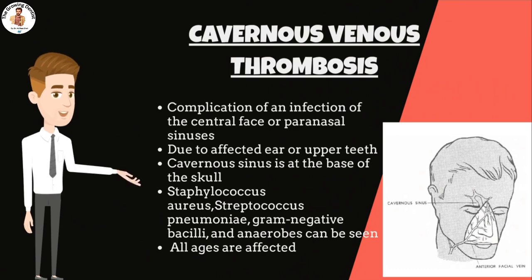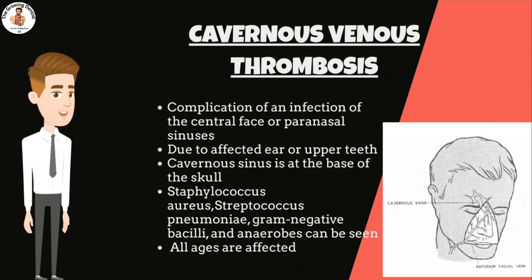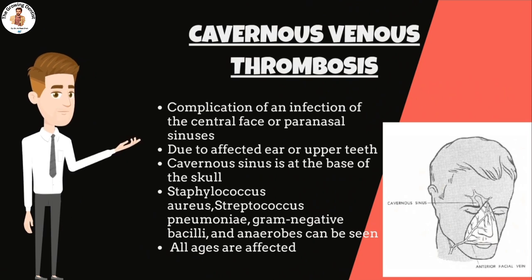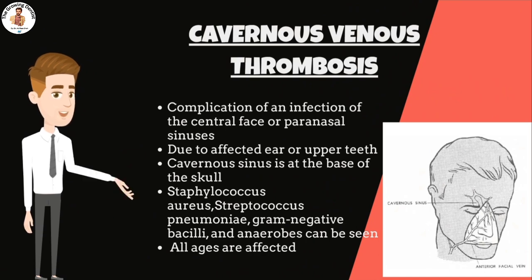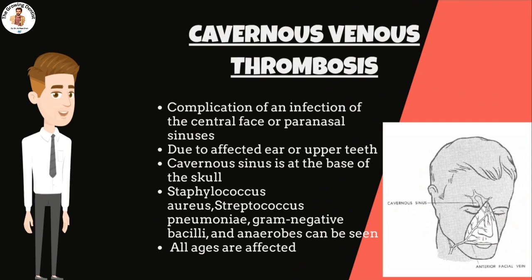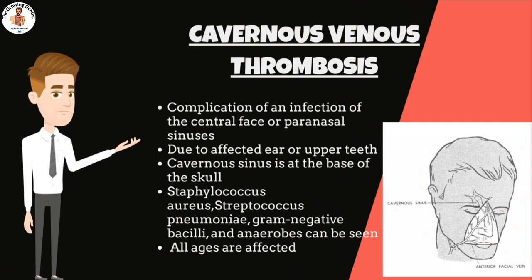The cavernous sinus is at the base of the skull. Staphylococcus aureus accounts for approximately 70% of all infections, although Streptococcus pneumoniae, gram-negative bacilli, and anaerobes can also be seen. All ages are affected, with a mean age of 22 years.